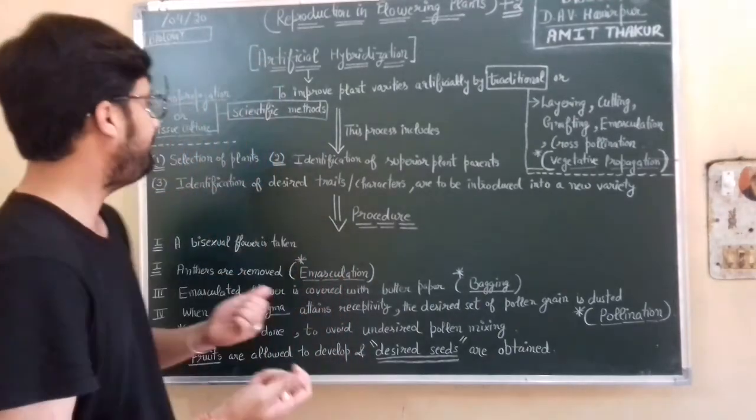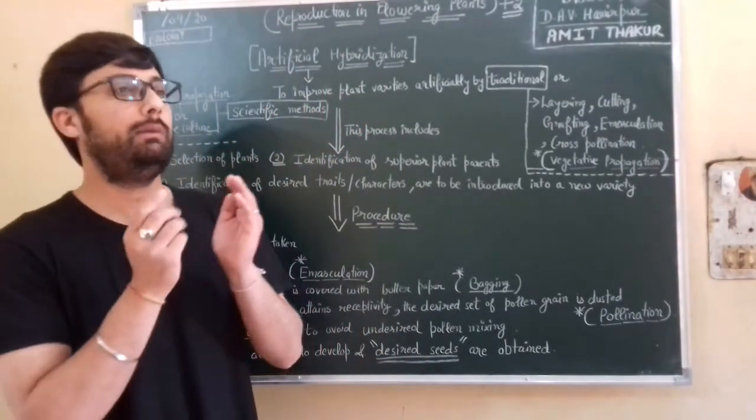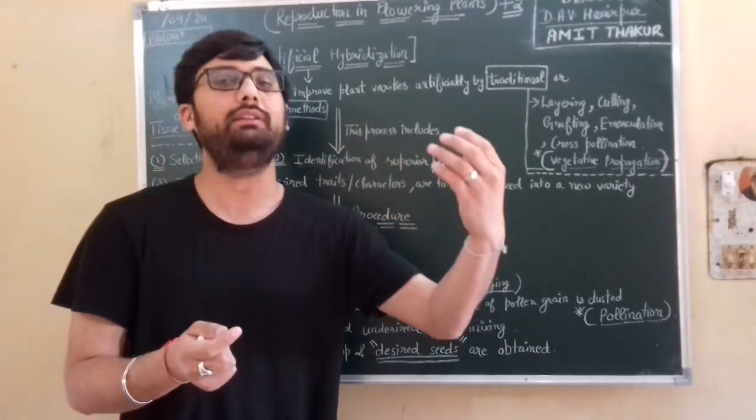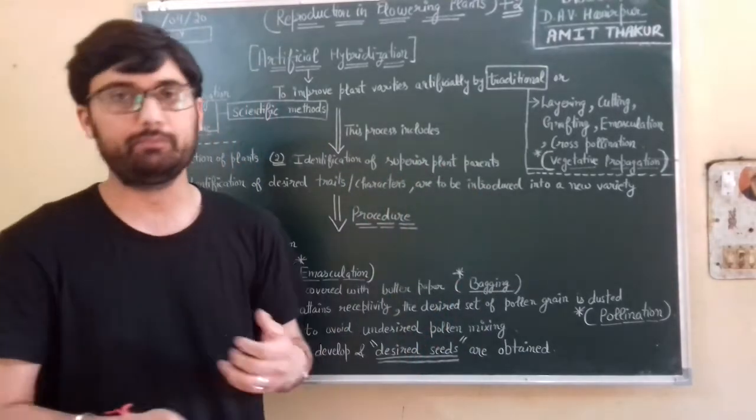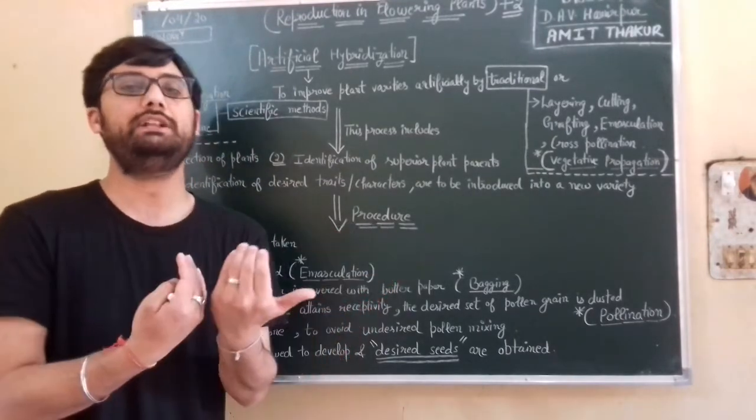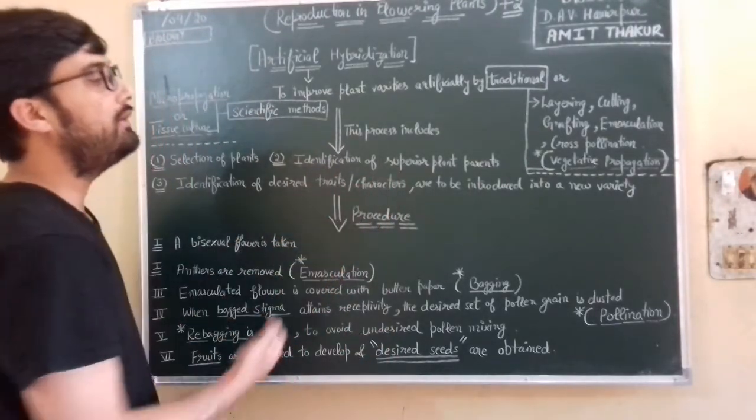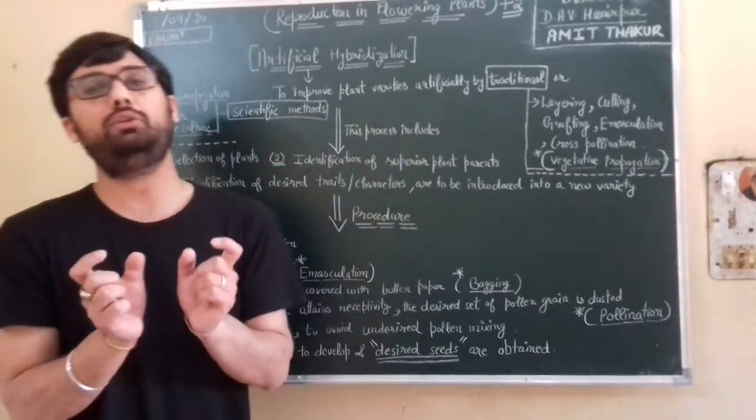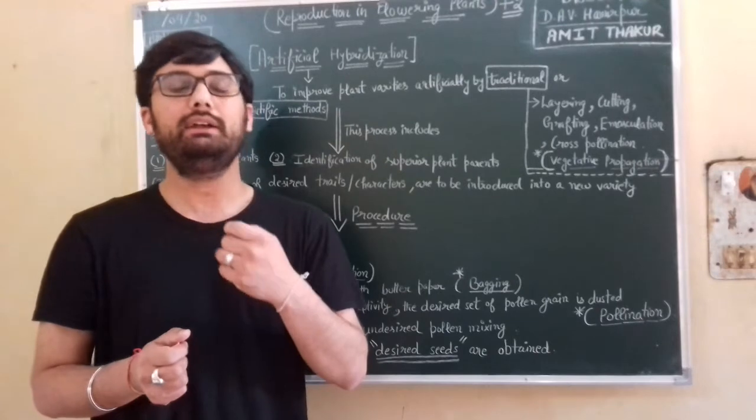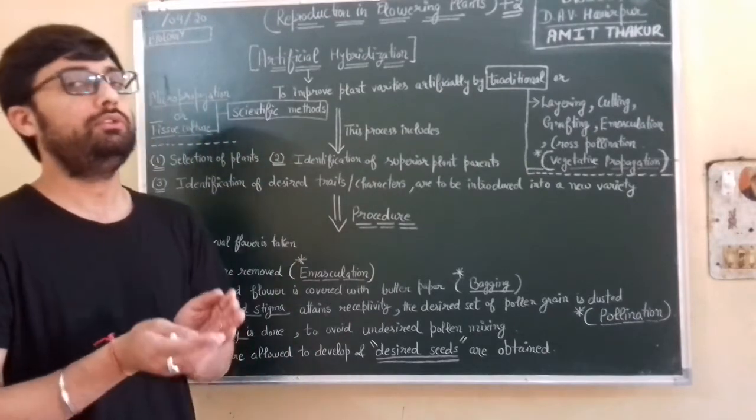First of all, what is the selection of plants? First of all, the selection of plants which are to be crossed. First of all, we will select those plants. And after the selection, identification of superior plant parents. So both of the plants of same or different variety would be superior, always superior.